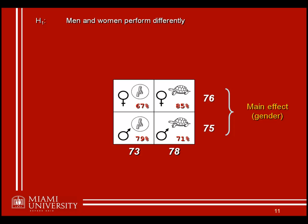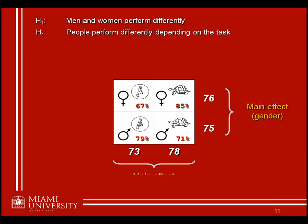Similarly, we might have a hypothesis just about the tasks — whether one type of task is more difficult than the other, regardless of whether males or females are performing it. Do people perform differently depending on the task? Is the mental rotation or the object memory task more difficult? In this case we compare the marginal means across the two columns — what we call the main effect of task.